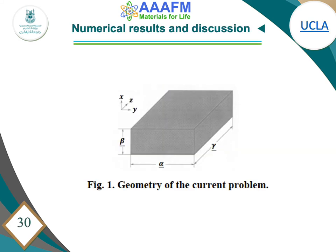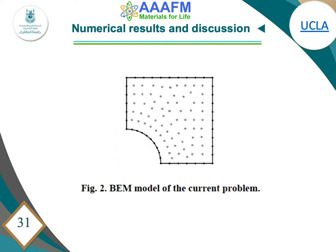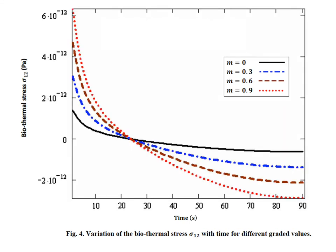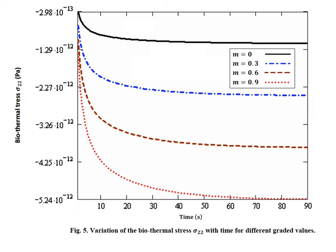For the numerical results, this shows the geometry of the problem and the boundary element mesh of our model. The variation of the bio-thermal stress with time is shown for different graded values. Here m equals 0 corresponds to the homogeneous case, while m equals 0.3, 0.6, and 0.9 correspond to functionally graded material parameters. The black curve represents the homogeneous case, and the other curves represent functionally graded material with graded parameters 0.3, 0.6, and 0.9.